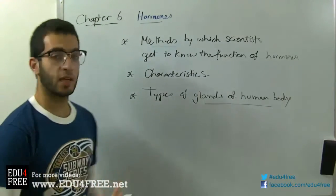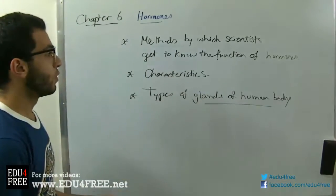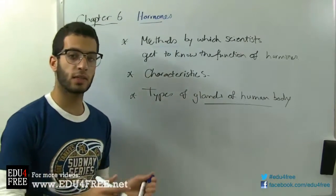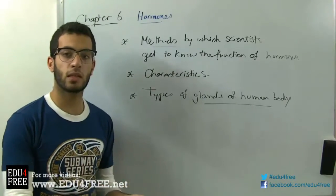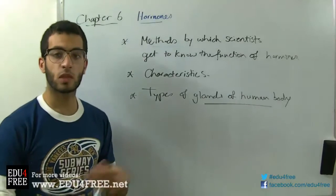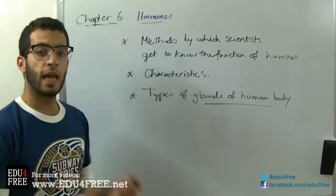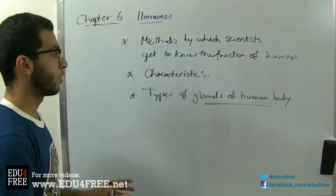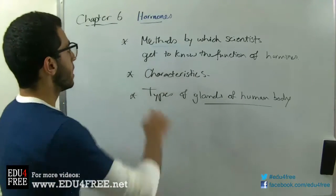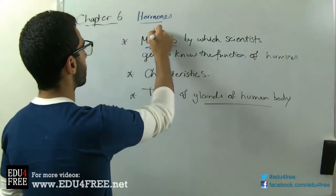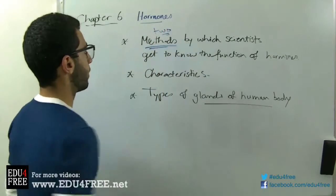Or they would actually take the extract of the endocrine gland and study it chemically in vitro or in vivo so that they can test the effects of this extract, and accordingly they can assess the function of the hormone produced. So these are the two methods that we have in the book.